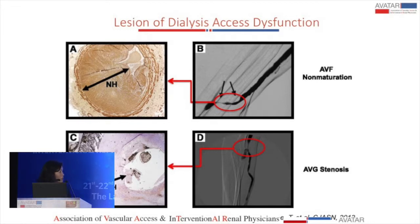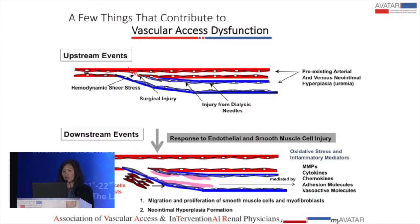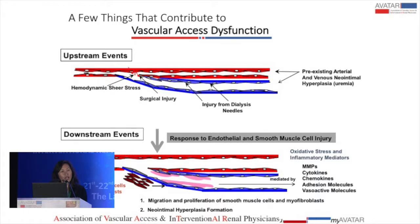For AV grafts, we see the graft material and neointimal hyperplasia manifesting as graft malfunction with poor flows, and radiologically we see the stenosis. So we need to think: where is the stenosis coming from? Dr. Galliani gave a very elegant discussion about maturation, but for vascular access dysfunction, I would like you to think about upstream events and downstream events.